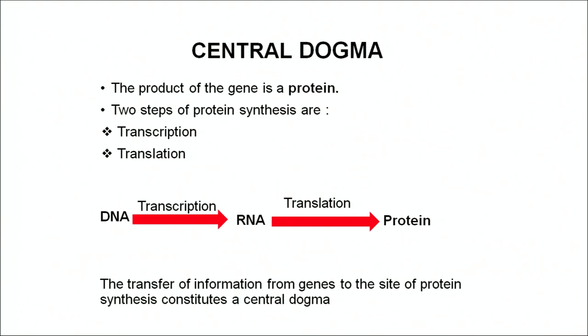We will now move on to the central dogma. Central dogma means the transfer of information from the gene to the site of protein synthesis. In eukaryotes, the site of the gene is the nucleus on the chromosome, and the site of protein synthesis is the cytoplasm. There are two steps involved in protein synthesis: transcription — the formation of messenger RNA from DNA — and translation — the formation of proteins using messenger RNA in the cytoplasm.